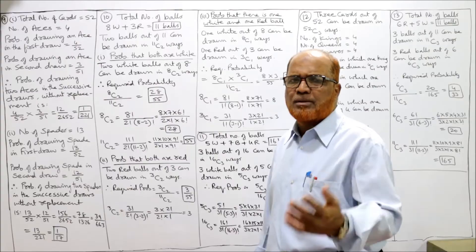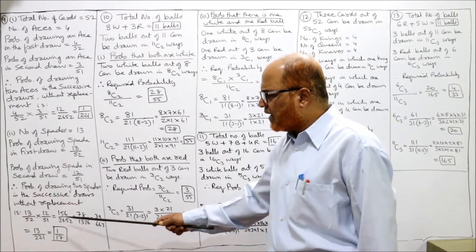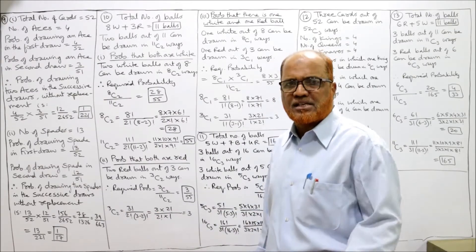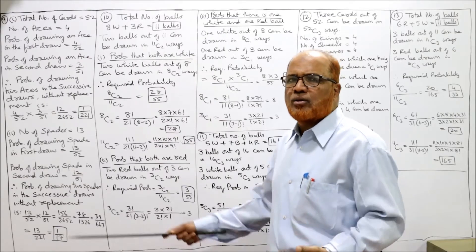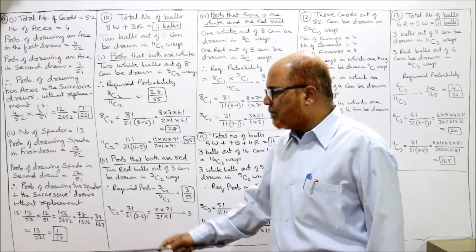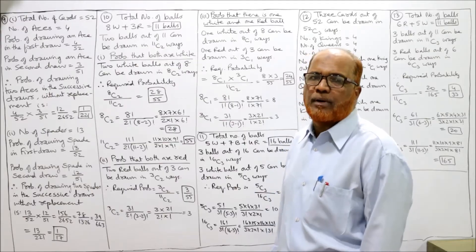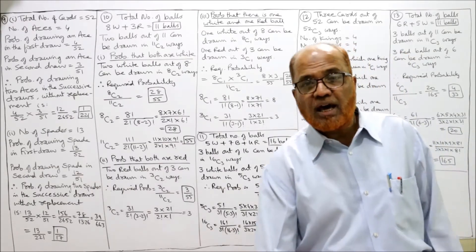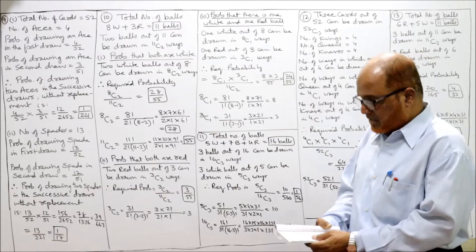This simplification is up to you — whether you simplify it or keep it as it is, you will get the same marks. So 1/17 is the required probability. That's it — this is problem number 9. Now moving to problem number 10.